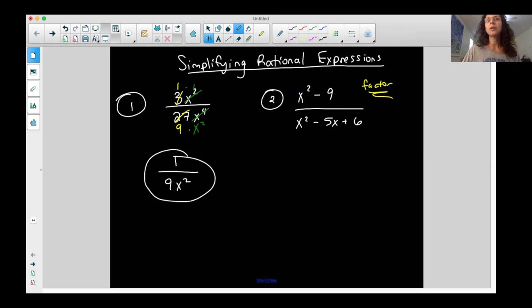In the numerator, I'm going to rewrite this, factored, and this I recognize as a special factoring case. It's a difference of squares, which factors into an x plus three and an x minus three. So that is now, instead of x squared minus nine, x plus three times x minus three.